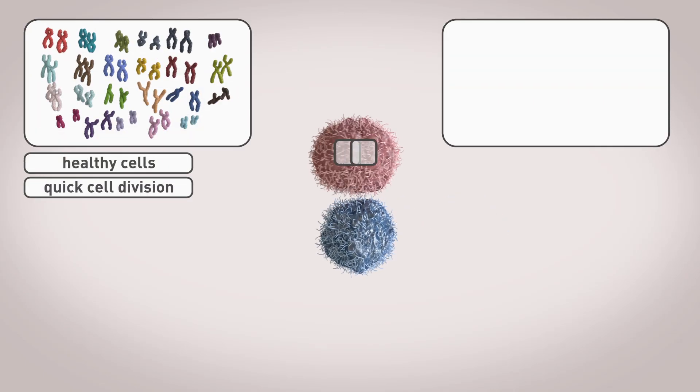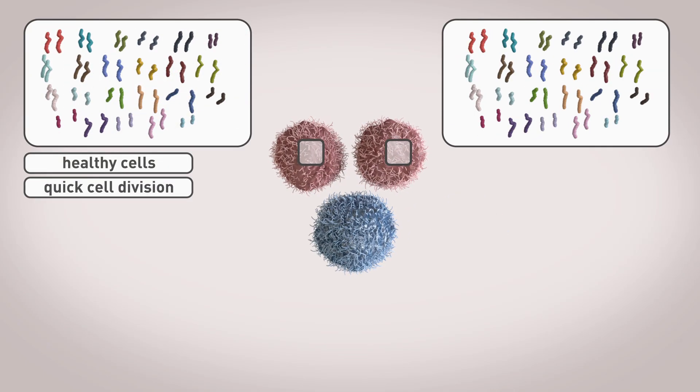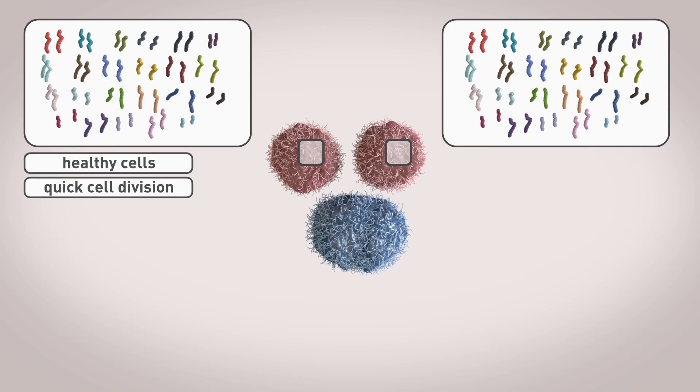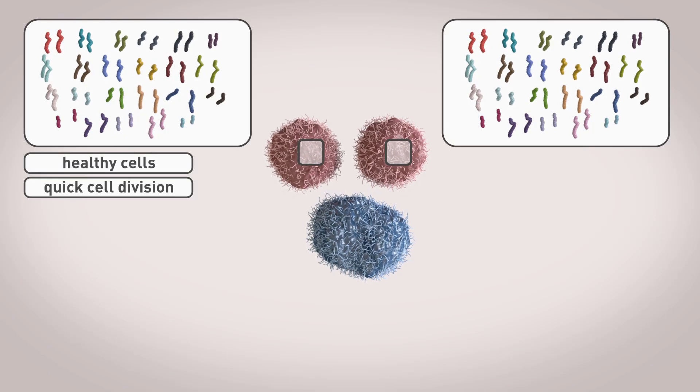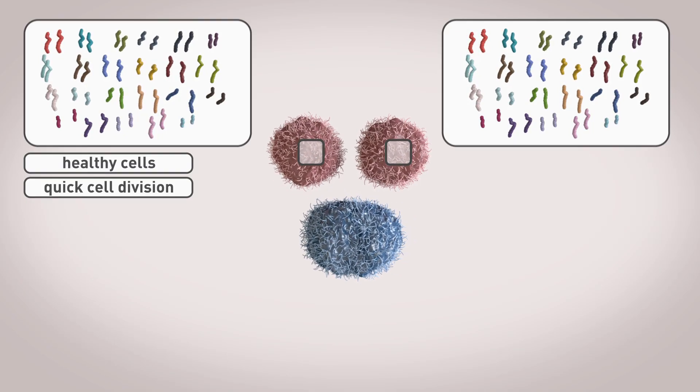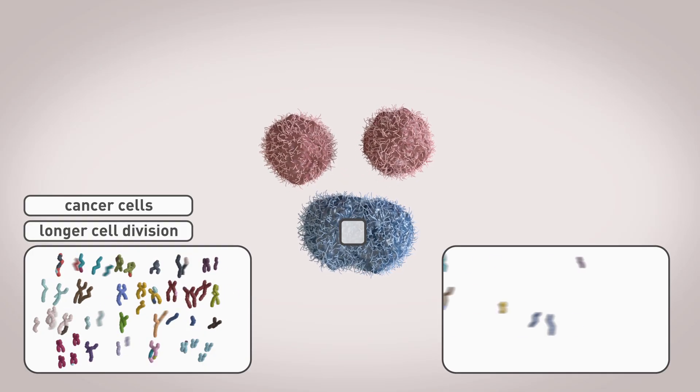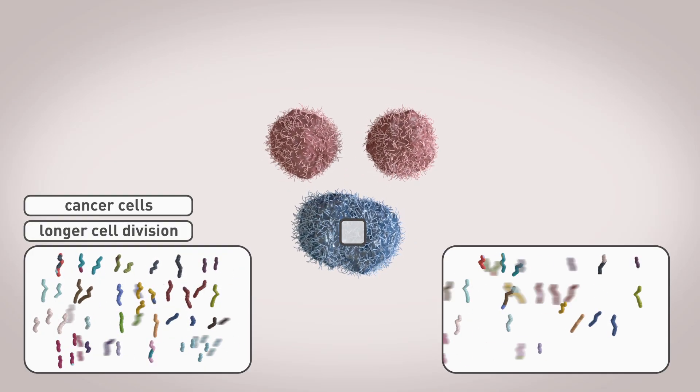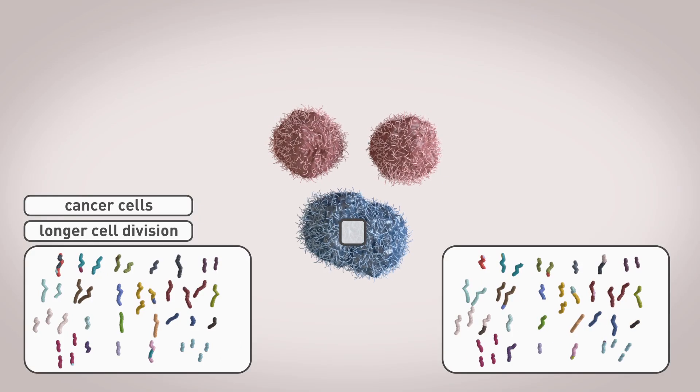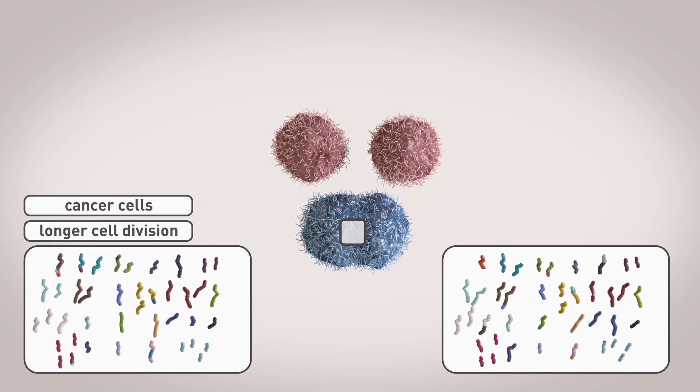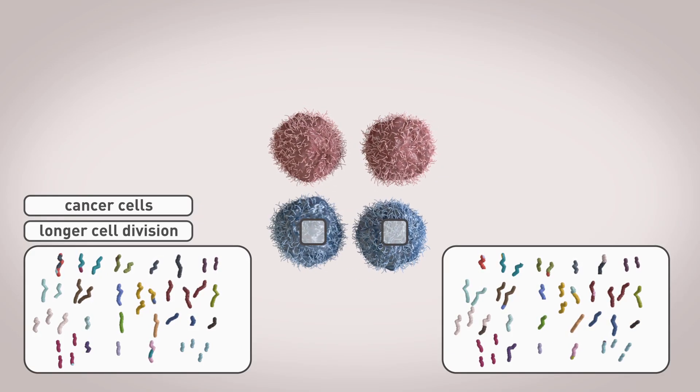Other new results show that cancer cells with badly damaged genomes have alterations in the machinery that helps the chromosomes separate in cell division. The cancer cells take a little longer to divide, which gives them enough time to avoid making excessive mistakes when distributing chromosomes. This avoids activating the cell's self-destruct button.